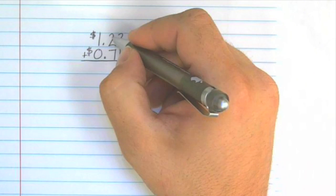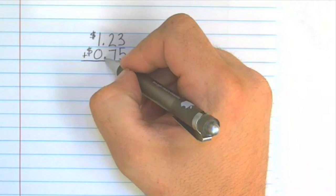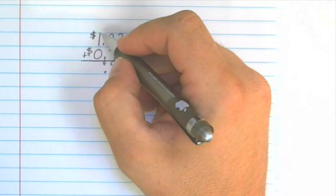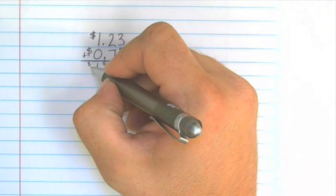3 plus 5 is 8, 2 plus 7 is 9, bring down the decimal point, 1 plus 0 is 1, bring down the dollar sign, and we have $1.98.